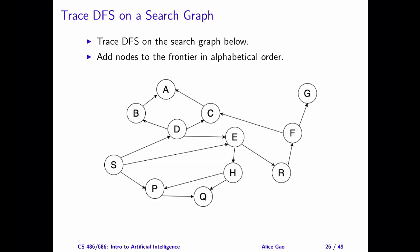Let's trace DFS on a search graph. We will add nodes to the frontier in alphabetical order. It is crucial to specify the order of adding nodes to the frontier. The order of adding nodes to the frontier determines the order of removing nodes from the frontier during the algorithm execution.